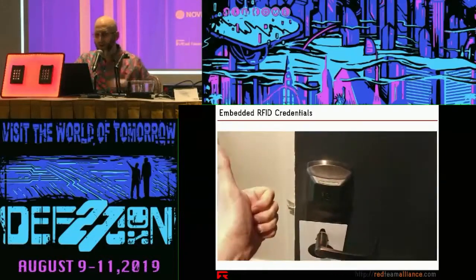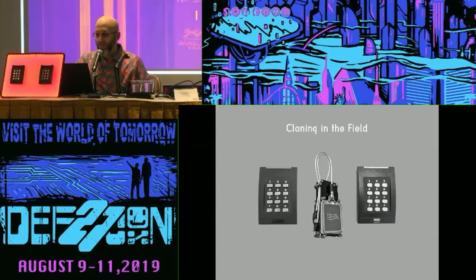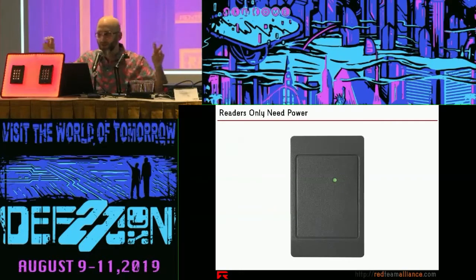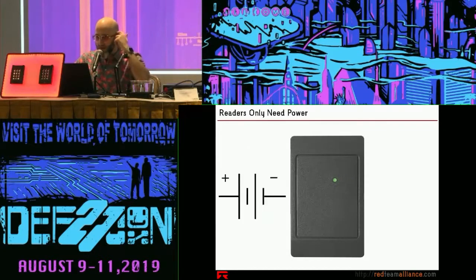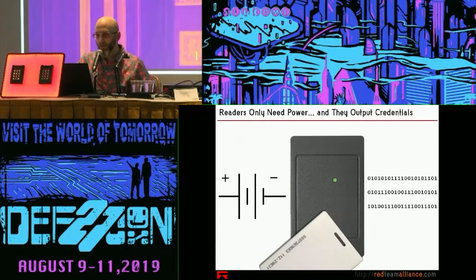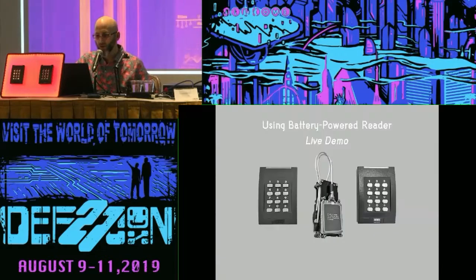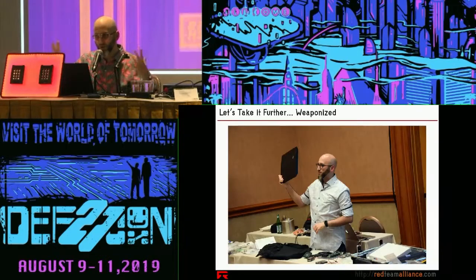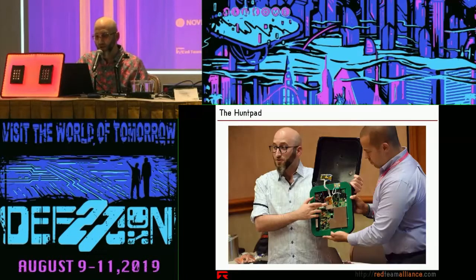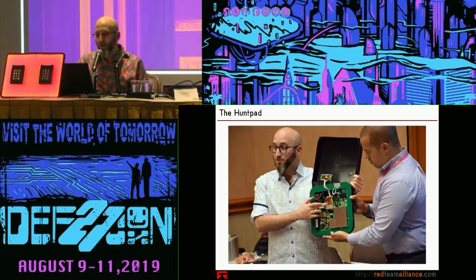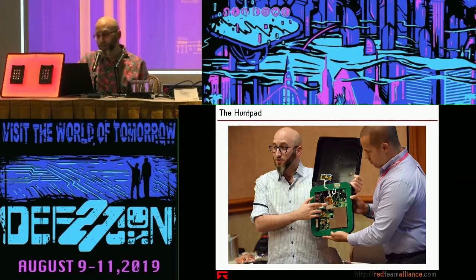In the field, we're not using a Proxmark — Proxmarks only work for very short distances. In the field, what we do is take a reader and weaponize it. Readers take power, take credentials, and spit out zeros and ones — it's not a bidirectional system. When we talk about long-range or weaponized readers, we're taking a long-range reader used for parking lots and garages — anywhere you don't want the user to get within two inches — and installing an Arduino or Raspberry Pi just to record those ones and zeros. It allows you to get very reliable, longer-range reads.